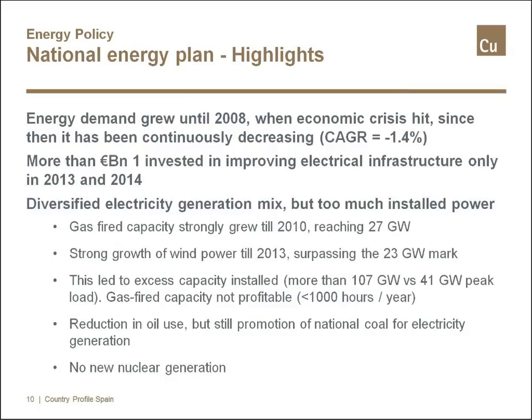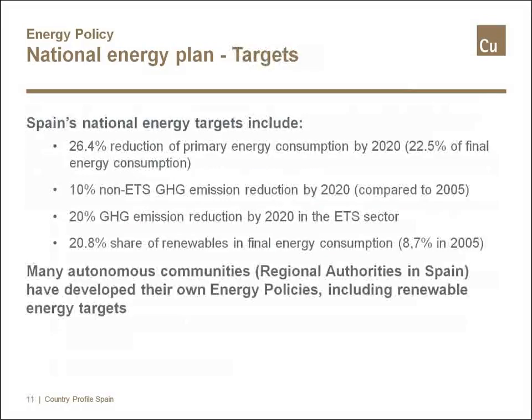There has been a reduction in oil use, but still some promotion of national coal for electricity generation, and no plans for new nuclear generation. On targets, the main objectives are: a 26% reduction in primary energy consumption by 2020; a 10% reduction in the non-ETS sector and 20% in the ETS sector for CO2 by 2020.